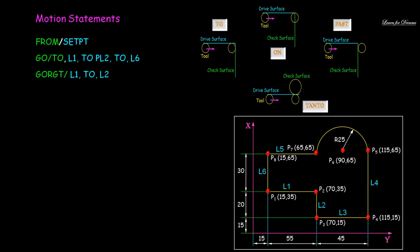For first move, check surface is L1 and we don't want to cross L1, hence we will use TO. PL2 is a part surface which is at 5mm depth where we want the tool tip to reside.